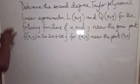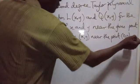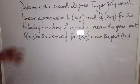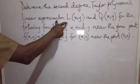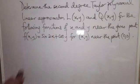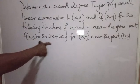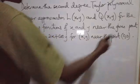Hello. We want to find the solution to this given problem. I am Dr. OJ Digitals, and you are welcome to this video. In this video, we want to discuss how to solve this problem about Taylor series. We are asked to determine the second degree Taylor Polynomial, the linear approximation L(x, y), and Q(x, y) for f(x, y) = sin(2x) + cos(y), near the point (0, 0).